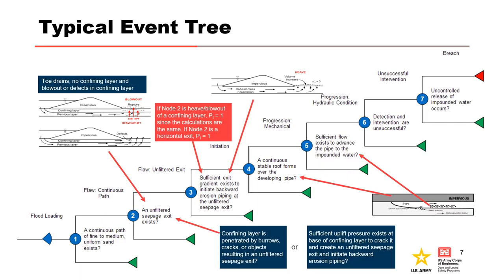In the typical backward erosion piping event tree, Node 1 relates to geologic conditions or material susceptibility. Node 2 relates to the presence of an unfiltered exit. Nodes 3 and 5 address the hydraulic conditions for initiation and progression, respectively. Node 4 assesses the mechanical condition for progression—in other words, roofing. Nodes 6 and 7 are unsuccessful intervention and breach, respectively. Use the generic event tree as a starting point but adapt for site-specific conditions.